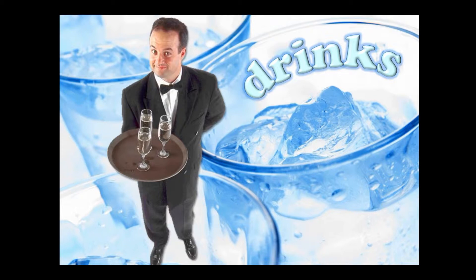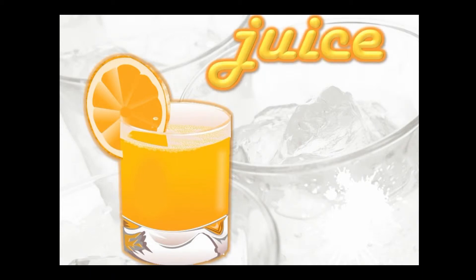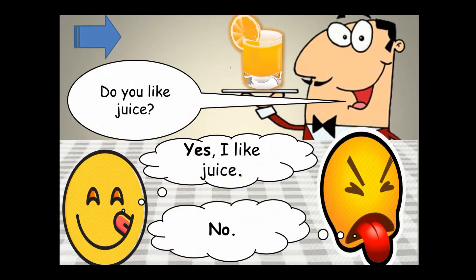And then we go into presenting the vocabulary. We go over the pronunciation. Also, I'm going to ask them what other types of juice there are — I'll ask them what this is, orange juice. But also I'll try and see if they know any other sorts of juices, fruit juice, etc.